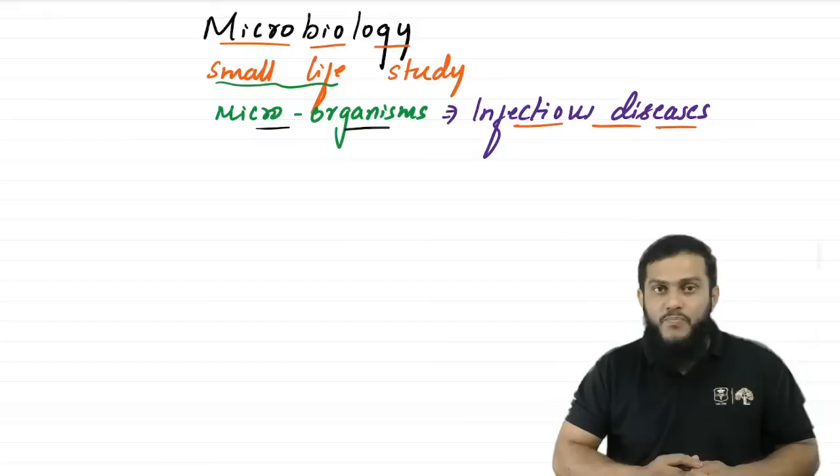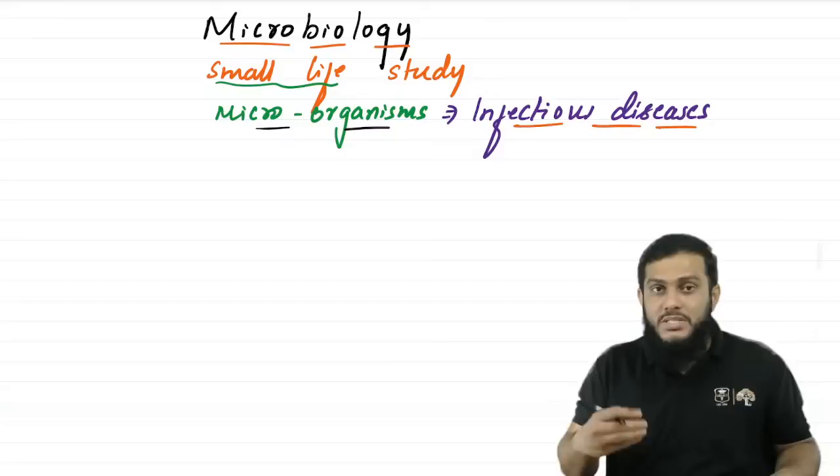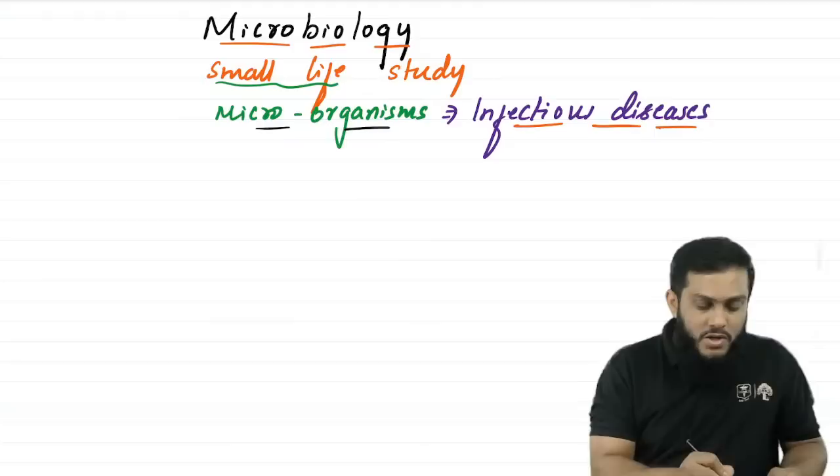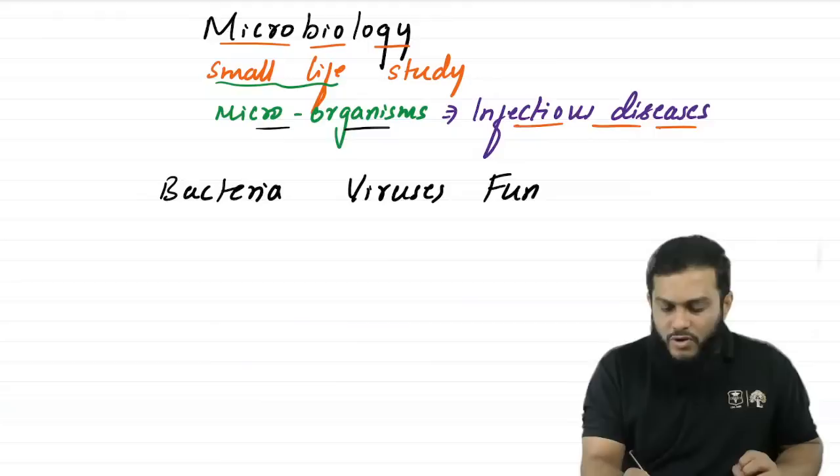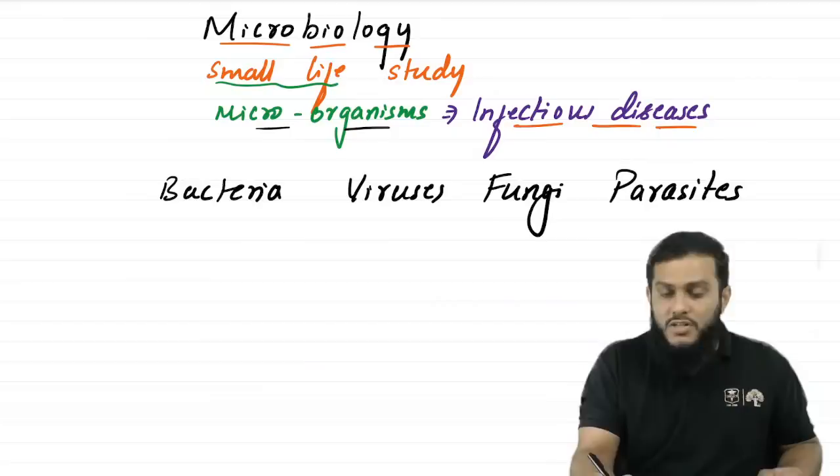How many microorganisms cause infection in humans? The answer is very simple — we have only four types: the first is bacteria, second is viruses, third is fungi, and finally parasites. We have four types of microorganisms that cause infection in humans.